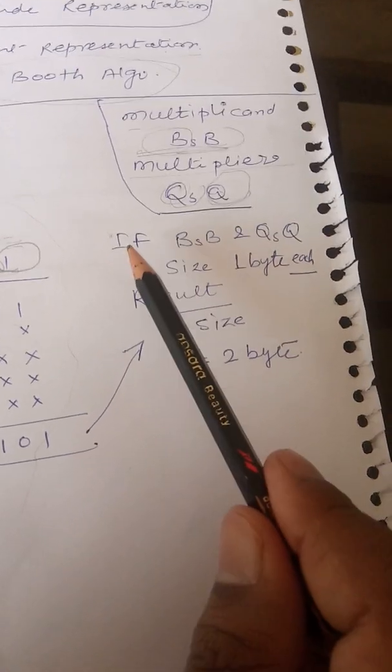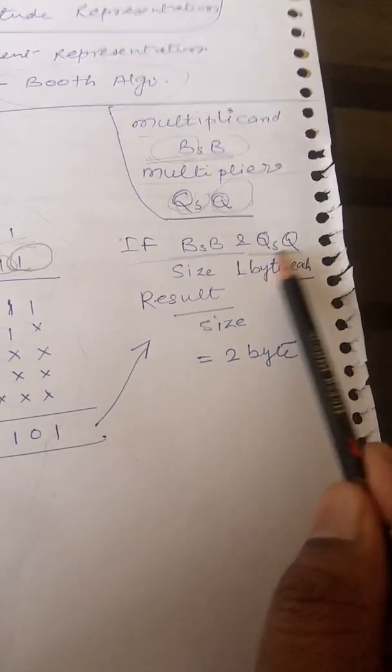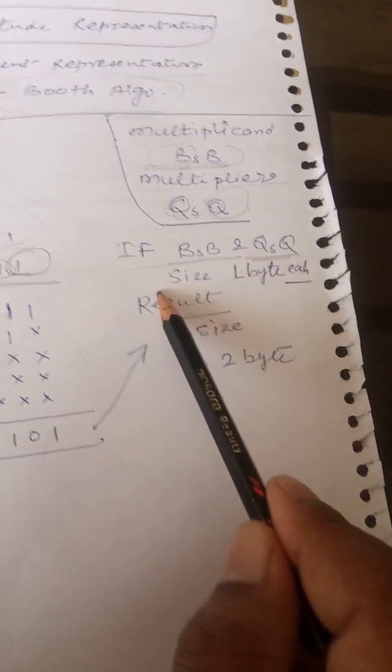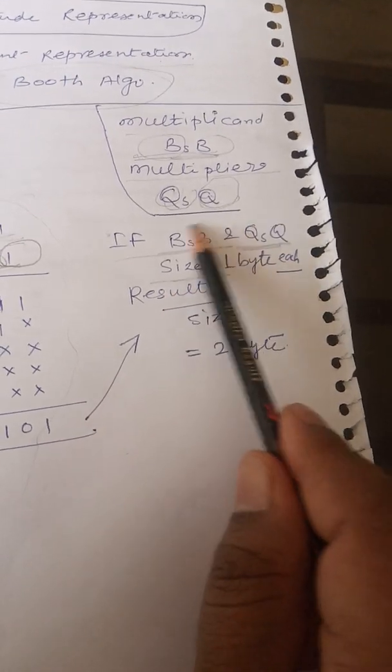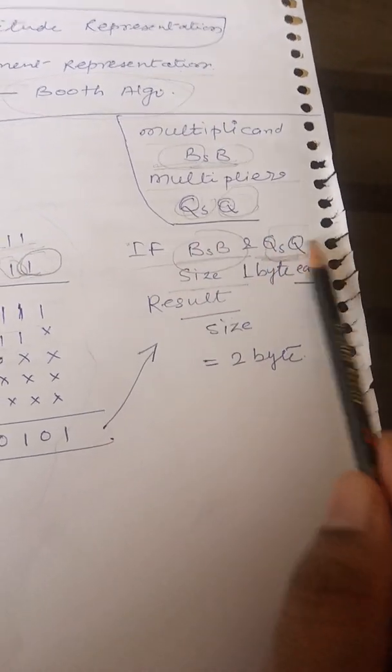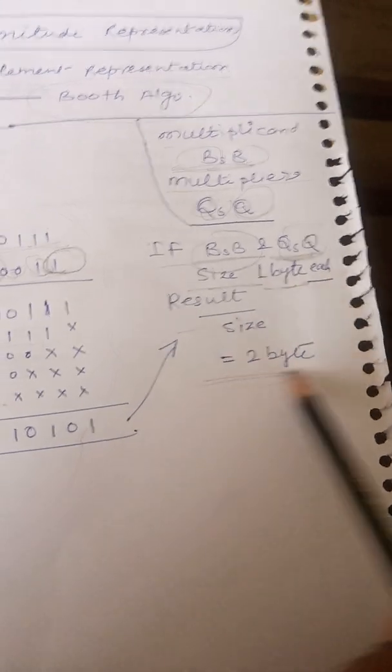So you should also understand that if two numbers BSB and QSQ are being multiplied, then if size of each of these is one byte, then result will be of size two bytes.